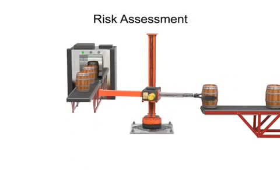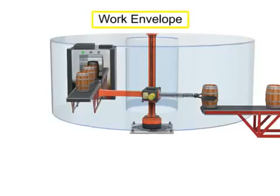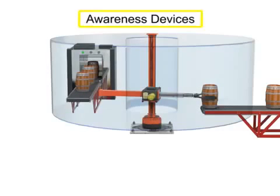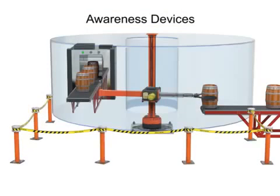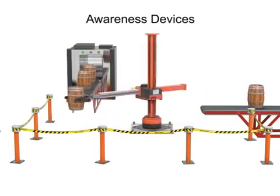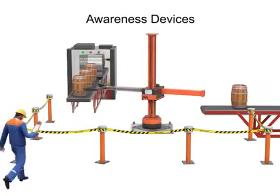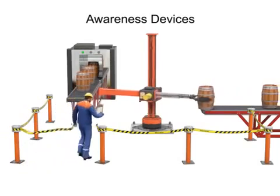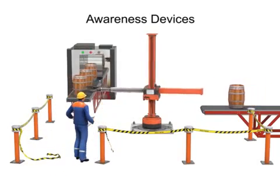Unauthorized access to the robot's work envelope can be hazardous to personnel. Several methods can be used to protect the work envelope. The simplest are known as awareness devices. These devices are only intended to define the work envelope and make personnel aware of the hazards. They do not prevent access and usually consist of small fences or roped-off areas.